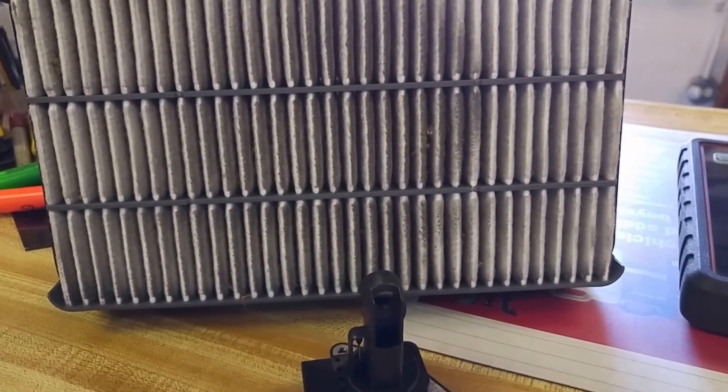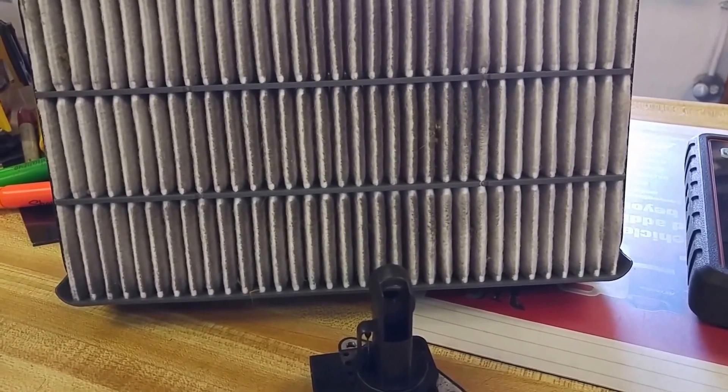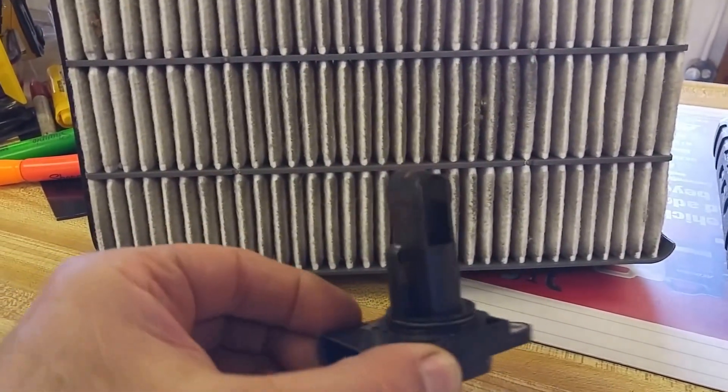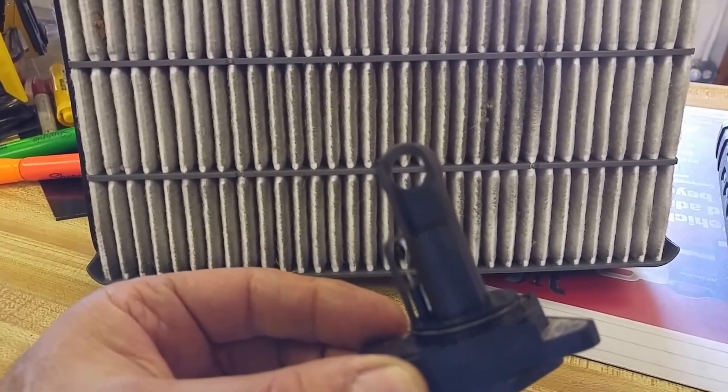2000 Toyota Avalon came into the shop this morning and it had a P0171 fault code. Ended up going through, finding the mass airflow sensor was out of calibration and I'm going to show you how I proved it.